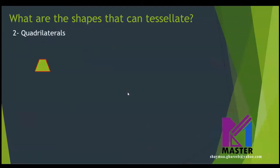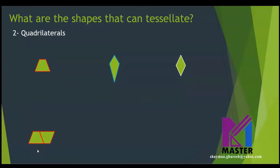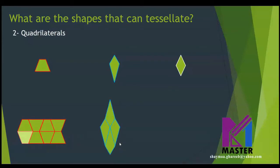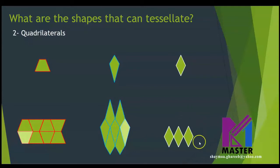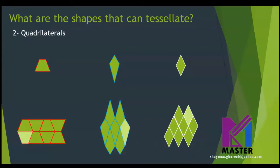Let's try more quadrilaterals, such as trapezium, kite, and rhombus. Let's start with the trapezium — it's an isosceles trapezium, by the way. As you can see, there are no gaps or overlaps. What about the kite? The kite can tessellate as there are no gaps or overlaps. What about the rhombus? As you can see, it can tessellate. So we can say that all quadrilaterals can tessellate.